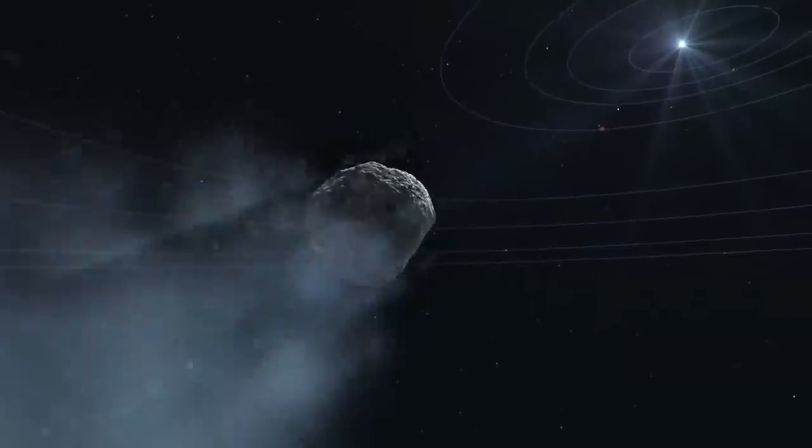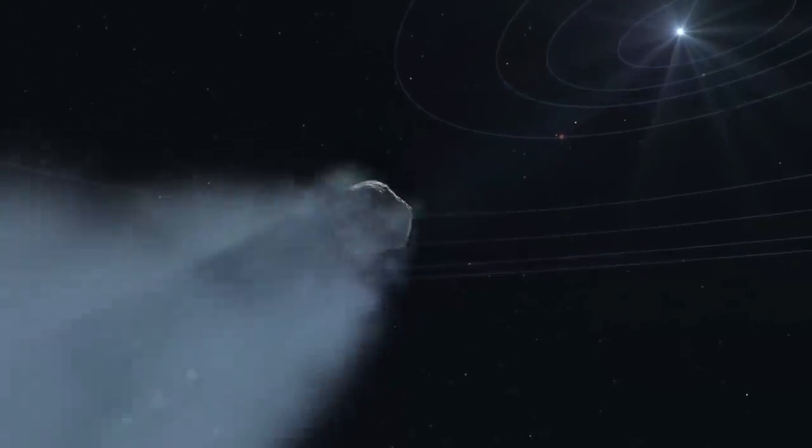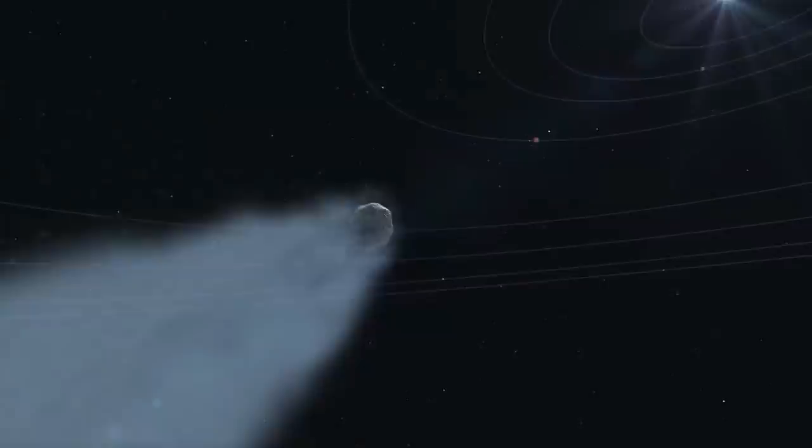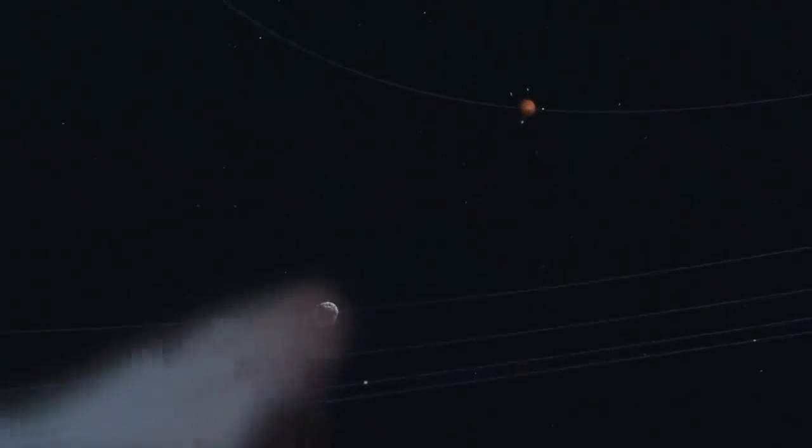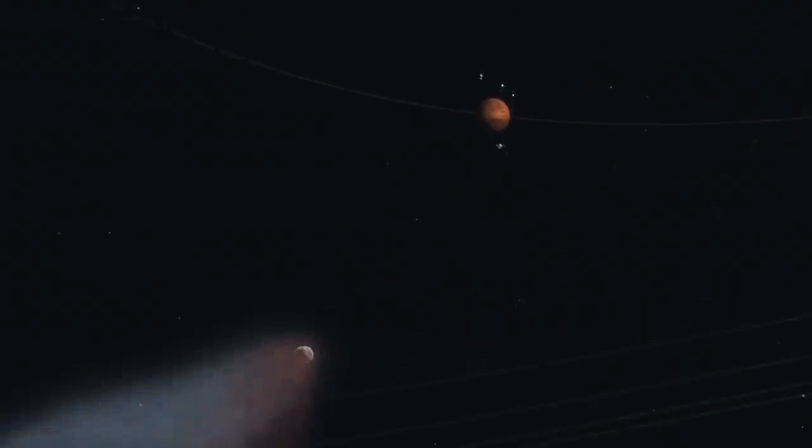While nature has a few ways to cause our extinction, there actually aren't that many that we currently are aware of. Asteroids and comets, the brightening sun, being located too close to a gamma ray burst and a few others, but the list is rather short. But as to causing our own extinction, there are some that are known and some that are unknown.